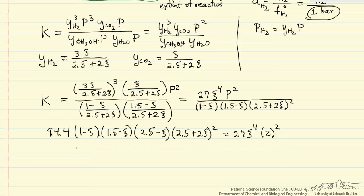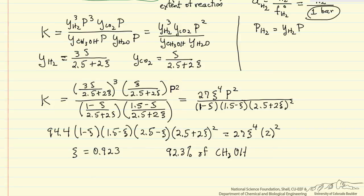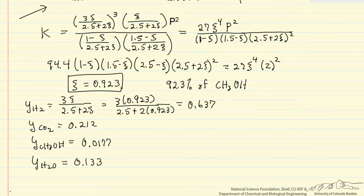Solving for the extent of reaction gives psi = 0.923, which means we converted 92.3% of the methanol. We have an excess of water, so the limiting reactant is methanol. I can substitute this value back into the mole fraction expressions to get the equilibrium mole fractions.